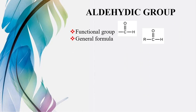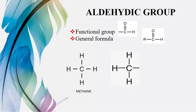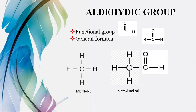Uske baad hai aldehydic functional group. Agar kisi bhi organic compound mein C double bond O, H — yani CHO functional group — alkyl radical ke saath attached hoga, to use hum kahenge aldehydic functional group. Jaise ke yeh hai humare paas methane, removal of one hydrogen makes it methyl radical, aur ab iski jagah jahan se humne hydrogen remove kiya hai, wahan hum laga rahe hain C=O-H. To yeh ban gaya acetaldehyde ya ethyl aldehyde.